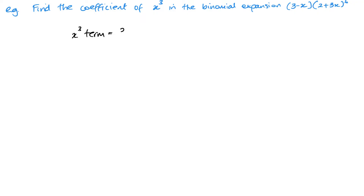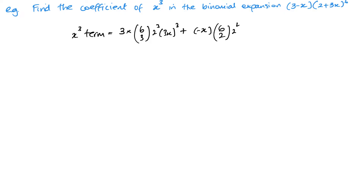So that is 3 times — the expansion's x cubed term is going to be 6C3, 2 to the power of 3, (3x) to the power of 3. Now the second part is when I multiply by minus x, so I need to multiply minus x by x squared to get x cubed. That's going to be minus x multiplied by the x squared term, which is 6C2, 2 to the power of 4, (3x) squared. You can check that all terms give x cubed — the minus x times x squared gives us x cubed as well.